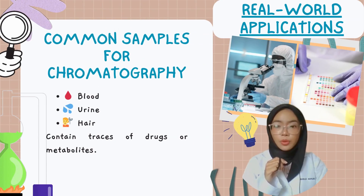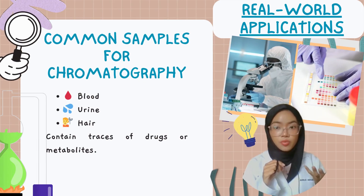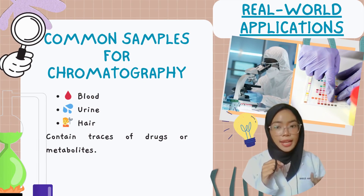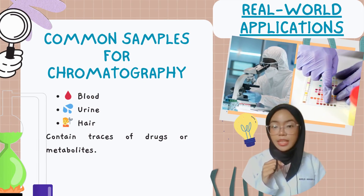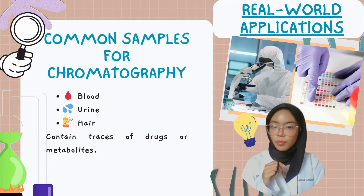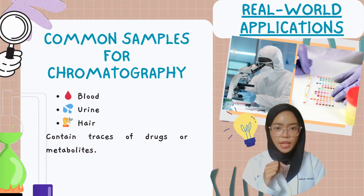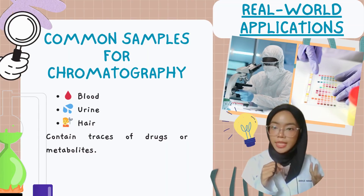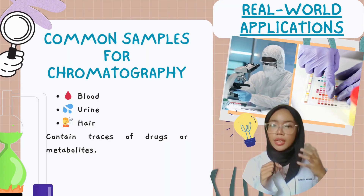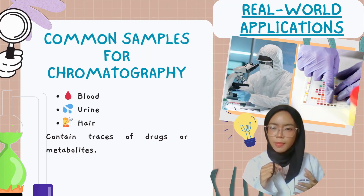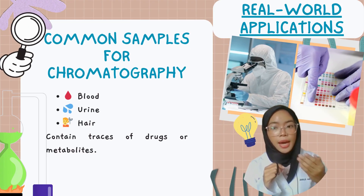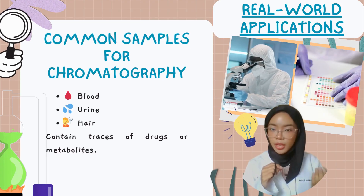Let's take a quick look at the types of biological samples used for drug testing. Blood and urine are commonly used to detect recent drug use. These samples can reveal both the drug itself and its breakdown products, called metabolites. Hair, on the other hand, provides a longer detection window, sometimes up to several months, making it ideal for looking at past or repeated drug use.